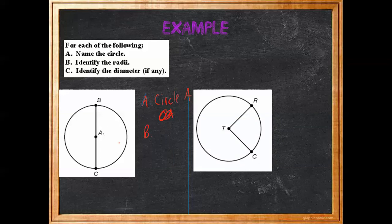Then we want to identify the radii. Here we have two: BA and CA — those are our two radii. And then the diameter: we do have a diameter here, and it's CB.